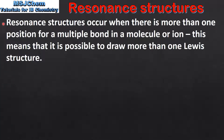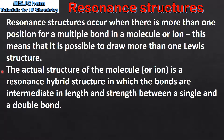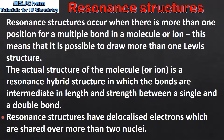To summarize: resonance structures occur when there is more than one position for a multiple bond in a molecule or ion, meaning it's possible to draw more than one correct Lewis structure. The actual structure of the molecule or ion is a resonance hybrid structure in which the bonds are intermediate in length and strength between a single and a double bond. Finally, resonance structures have delocalized electrons which are shared over more than two nuclei. Delocalized electrons are covered in more detail in a later video.